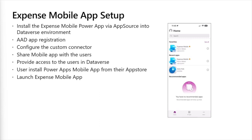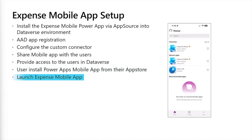Next, let's look at how users can install and access the app on their mobile devices. Users can install the Power Apps mobile app from the App Store. Once installed, they open Power Apps, sign in with the same corporate account used for Dynamics 365 Finance, and use the search field to search for 'Expense Mobile.' Because it is a Canvas app, you can add it to your favorites list in Power Apps by tapping the star. Then open the Expense Mobile app and start to use it.